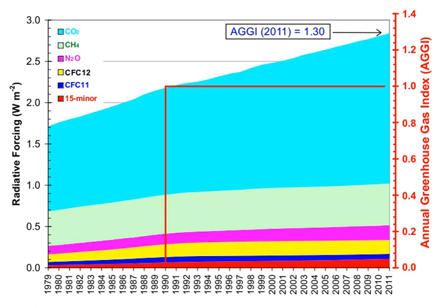Annual per capita emissions in the industrialized countries are typically as much as 10 times the average in developing countries. Due to China's fast economic development, its annual per capita emissions are quickly approaching the levels of those in the Annex I group of the Kyoto Protocol — the developed countries excluding the US. Other countries with fast-growing emissions are South Korea, Iran, and Australia, which, apart from the oil-rich Persian Gulf states, now has the highest per capita emission rate in the world. Annual per capita emissions of the EU-15 and the US are gradually decreasing over time.